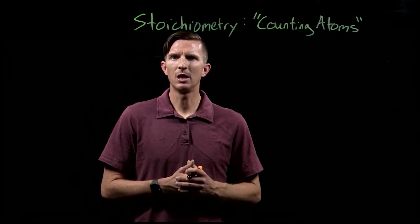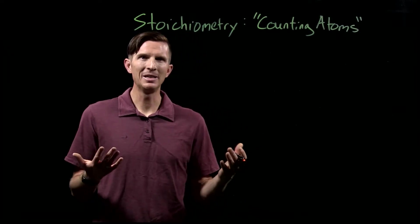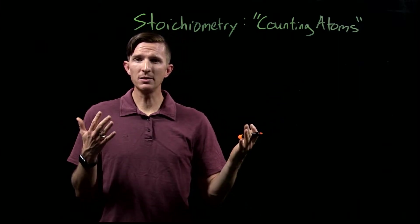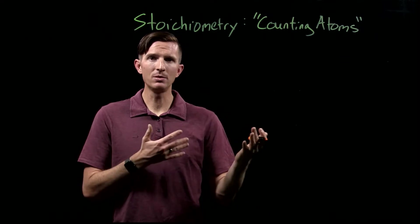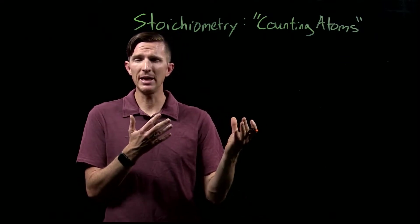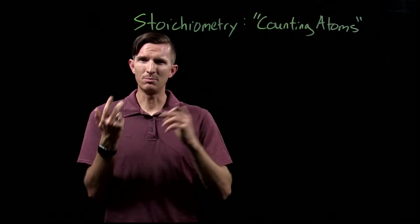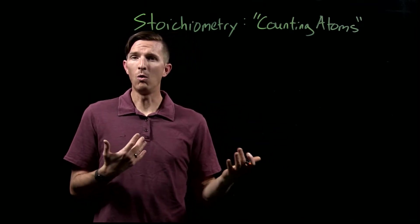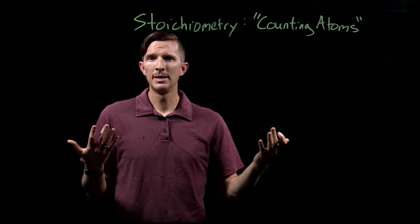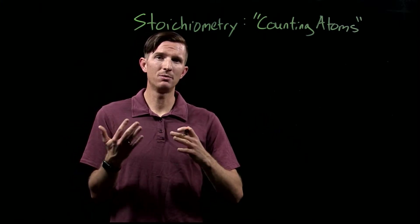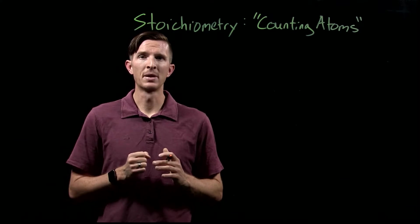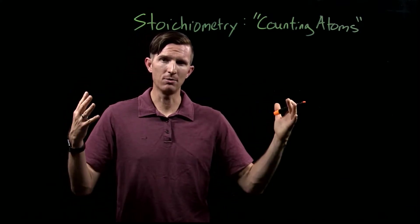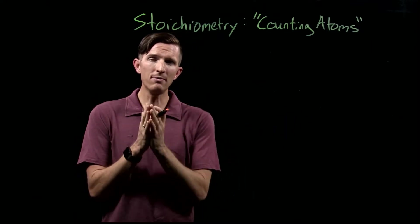Let's talk about stoichiometry. Stoichiometry basically means counting atoms, and when we apply it we count atoms to relate reactants and products, elements within a compound to each other, or to the full compound. It gives us the ability to relate amounts of different substances to each other, and we can apply this in two broad categories within chemistry.